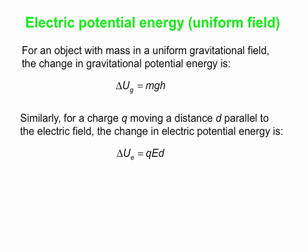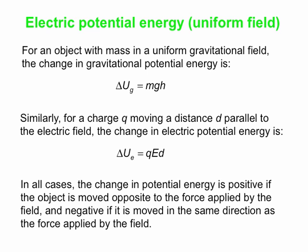This quantity does have a sign. The change in potential energy is always positive if the object is moved opposite to the force supplied by the field. If you hold your baseball and move it up, the gravitational force is down; moving opposite to the field increases the ball's gravitational potential energy. If you let it fall down — going with the field — the change in gravitational potential energy is negative.